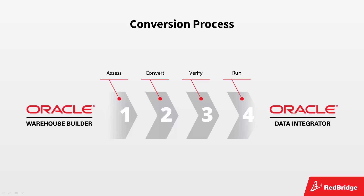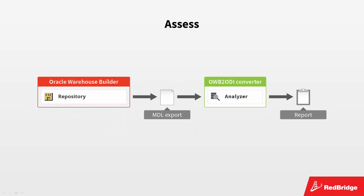The conversion process can be split up into four main steps. The first step is the assessment step. Our converter analyses the exported OWB MDL file provided by the customer and generates a conversion report. Our specialists discuss this analysis with the customer and together they decide on how the future ODI topology needs to be configured, how exceptions will be handled, how the knowledge modules should be defined and what the configuration management requirements are.